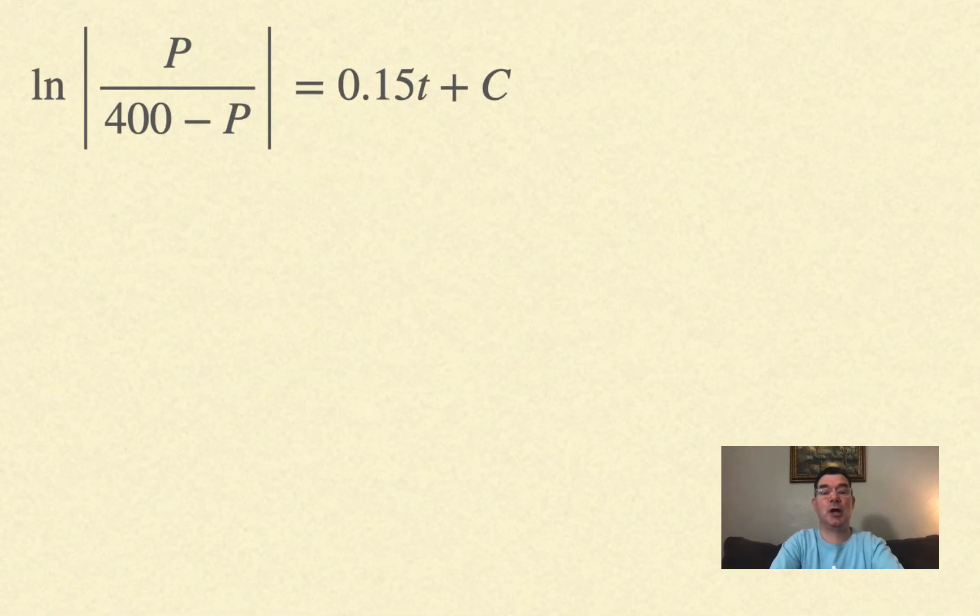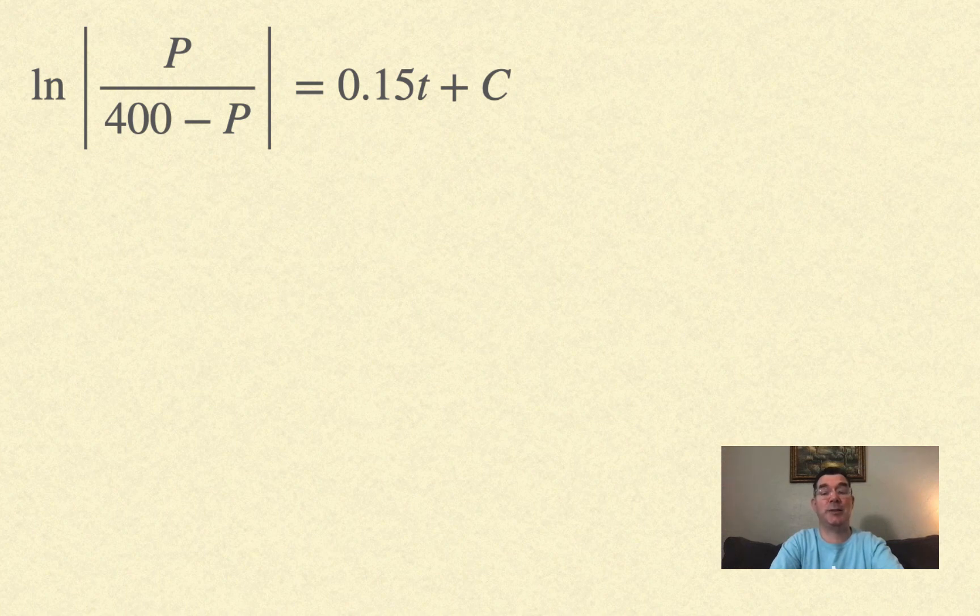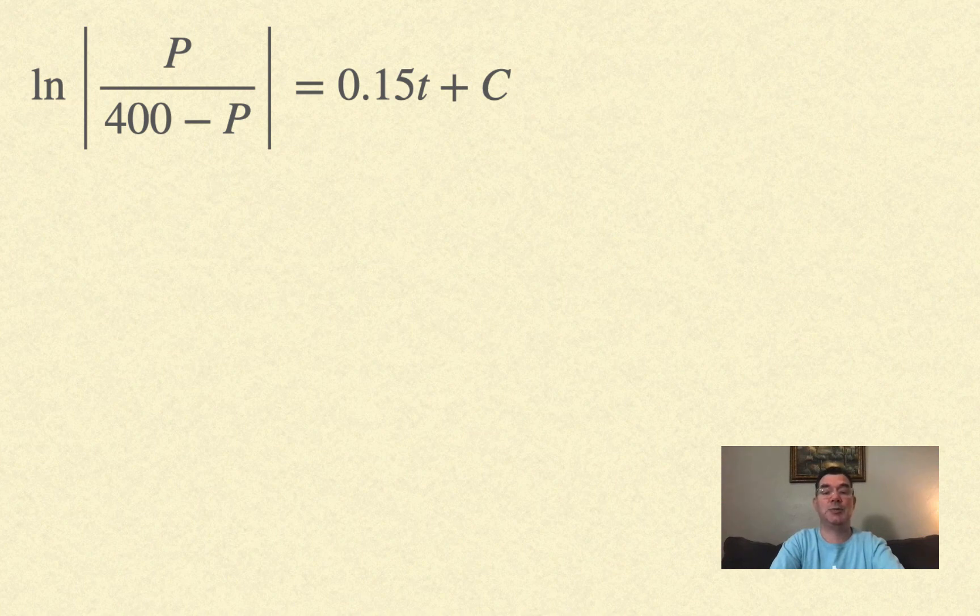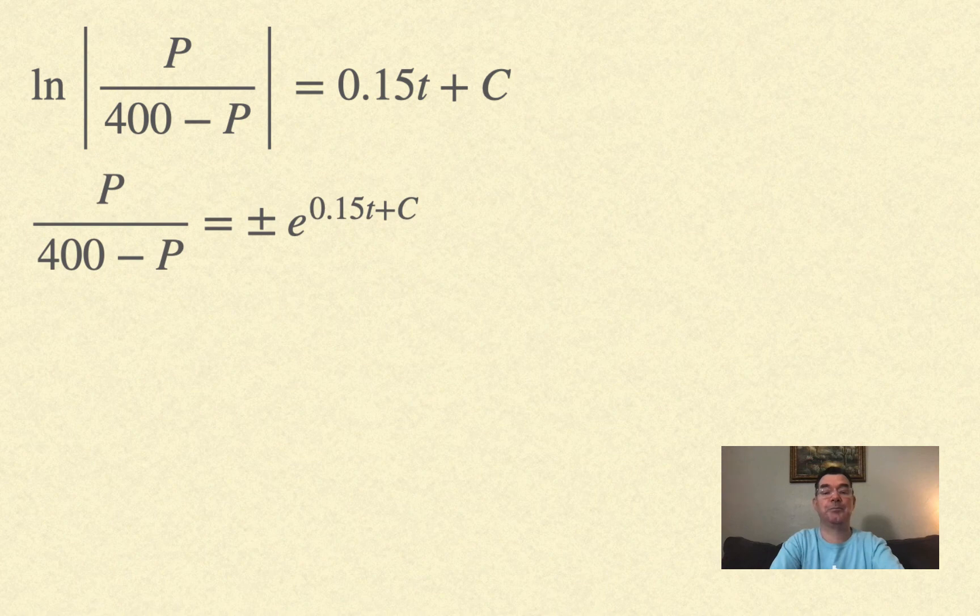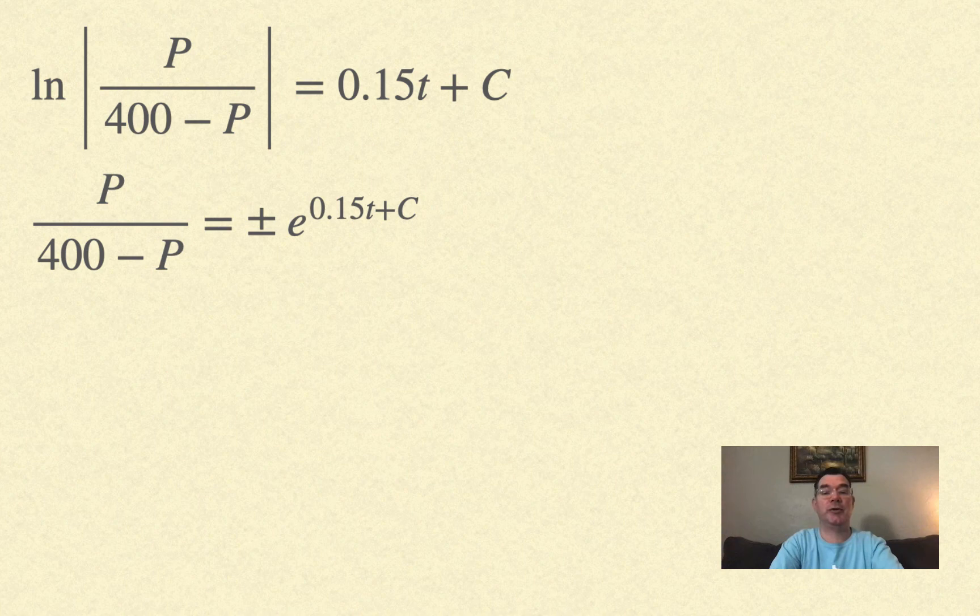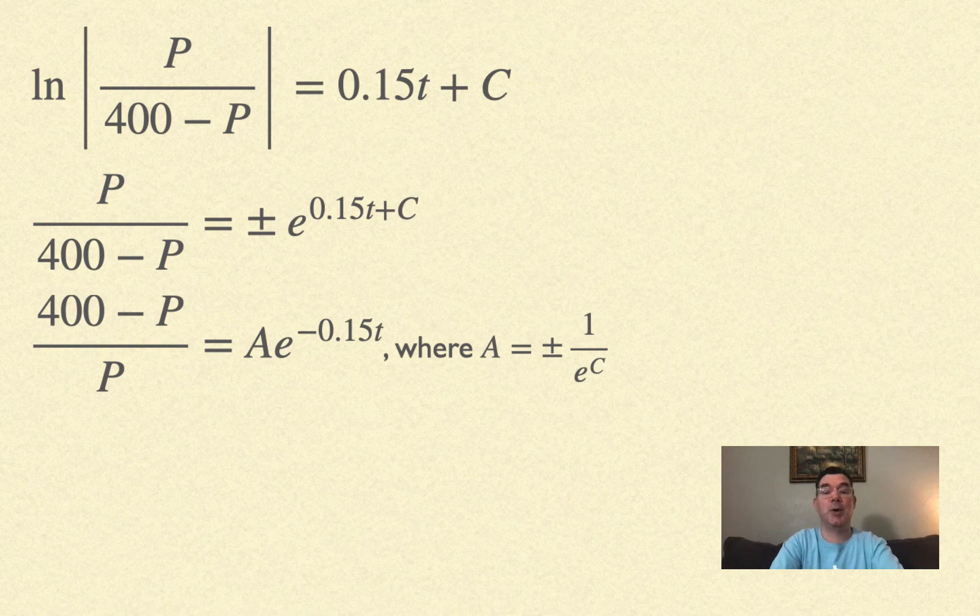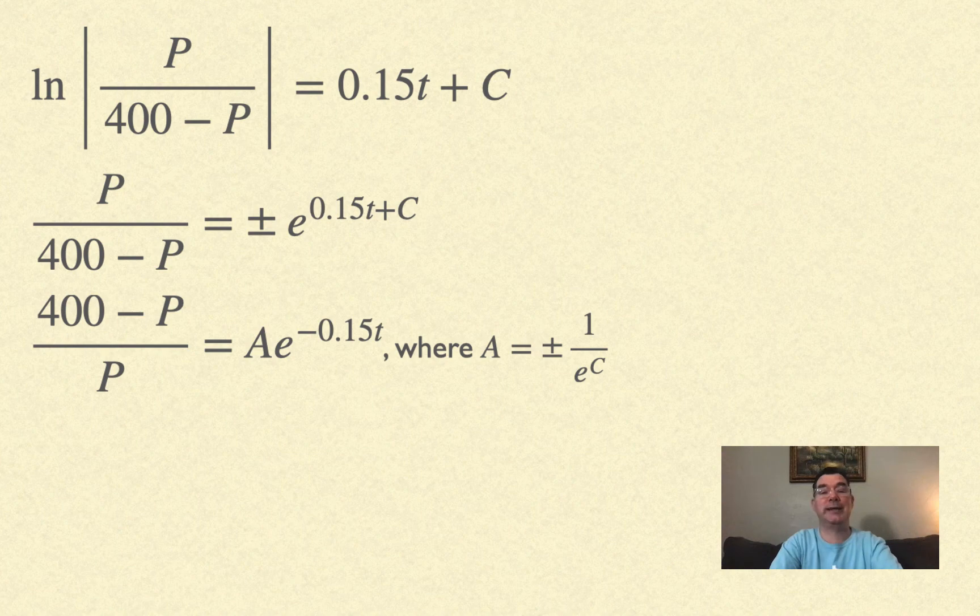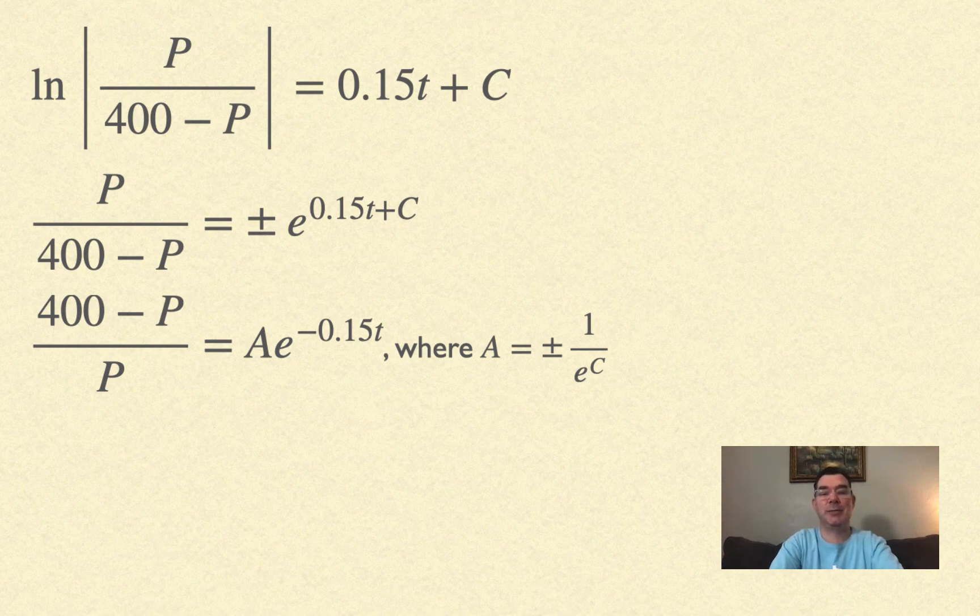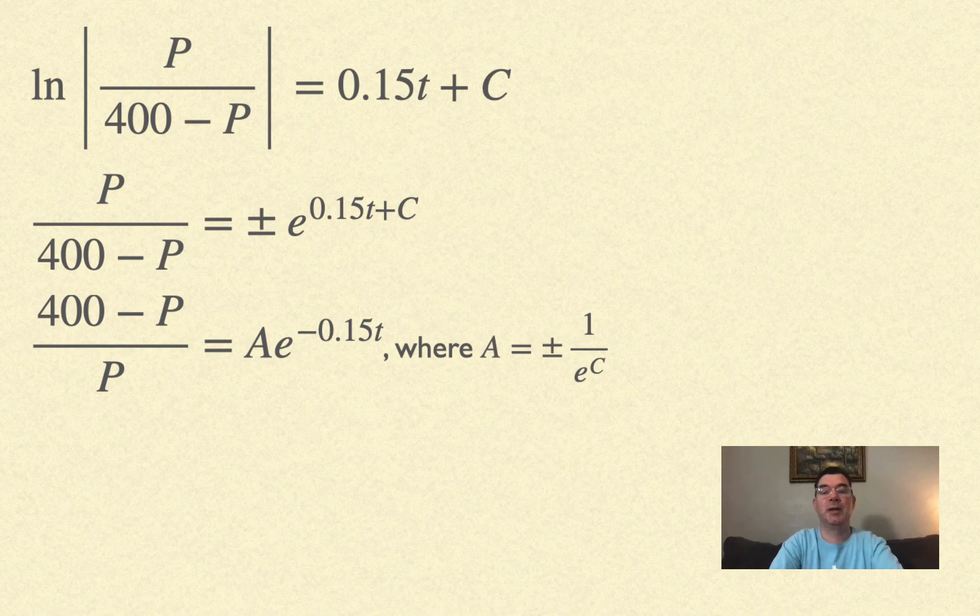I combine those natural logarithms as ln(P/(400-P)) = 0.15t + C. Raising both sides as an exponent of e gives P/(400-P) = ±e^(0.15t+C). Flipping both sides upside down, (400-P)/P equals a constant times e^(-0.15t).